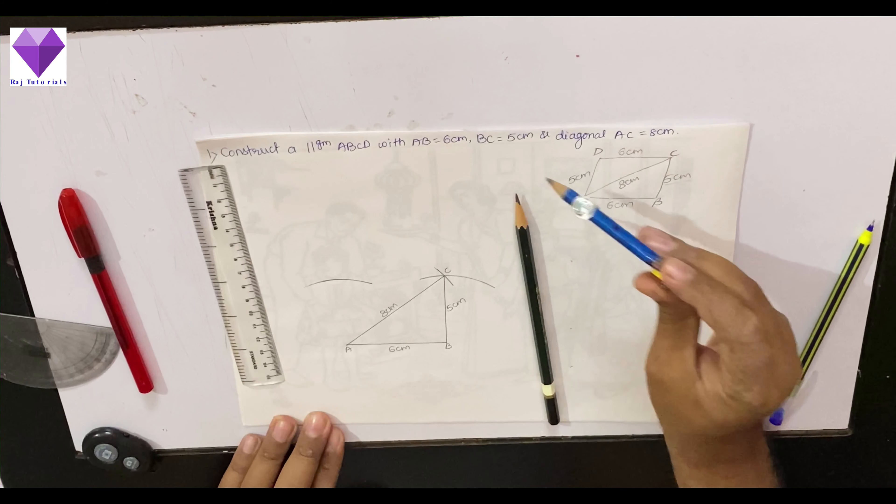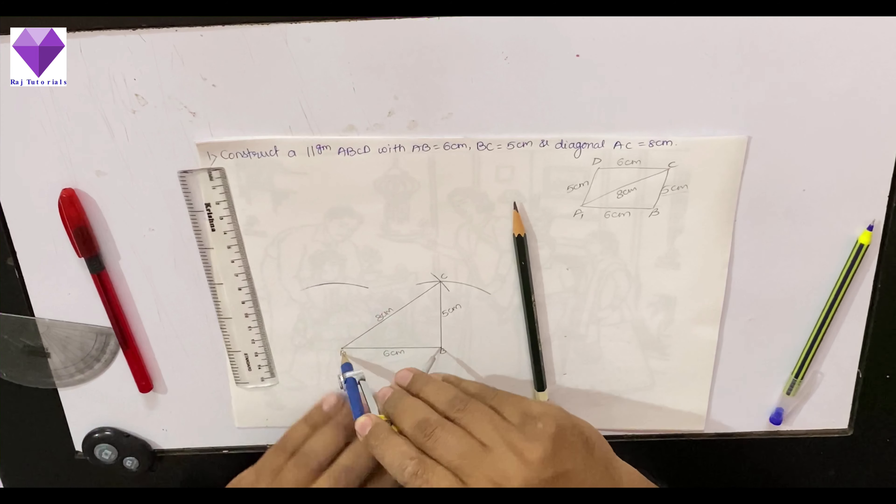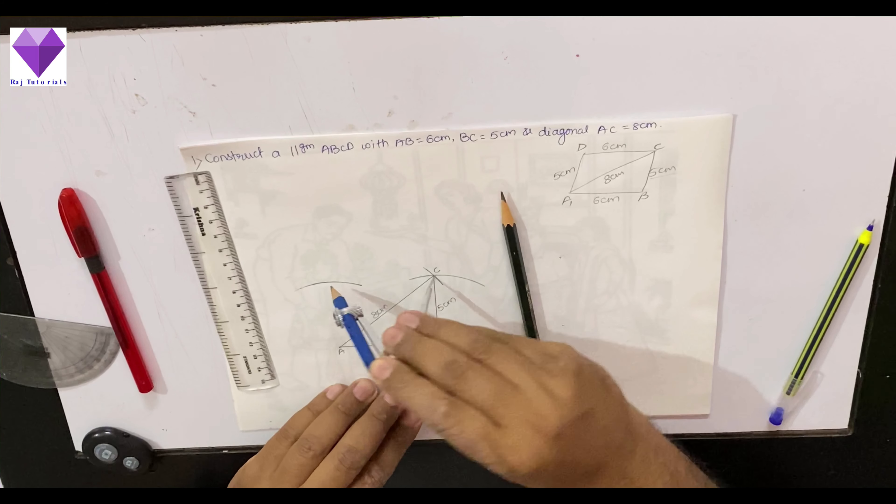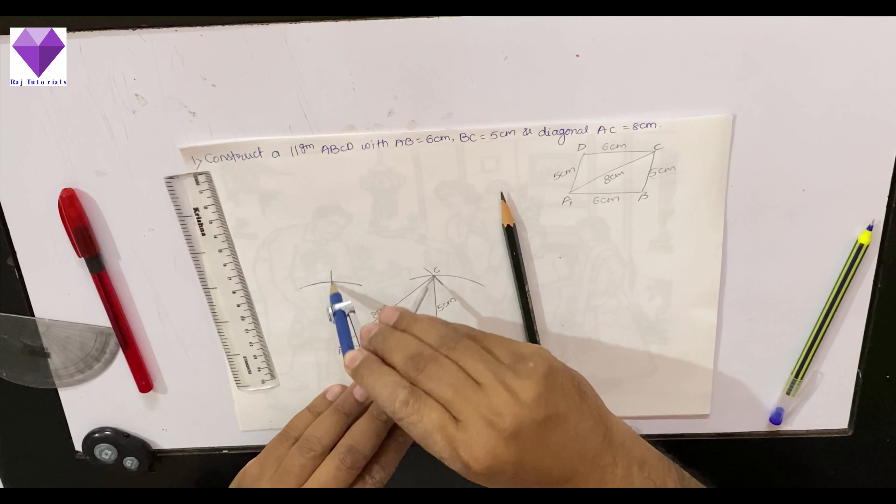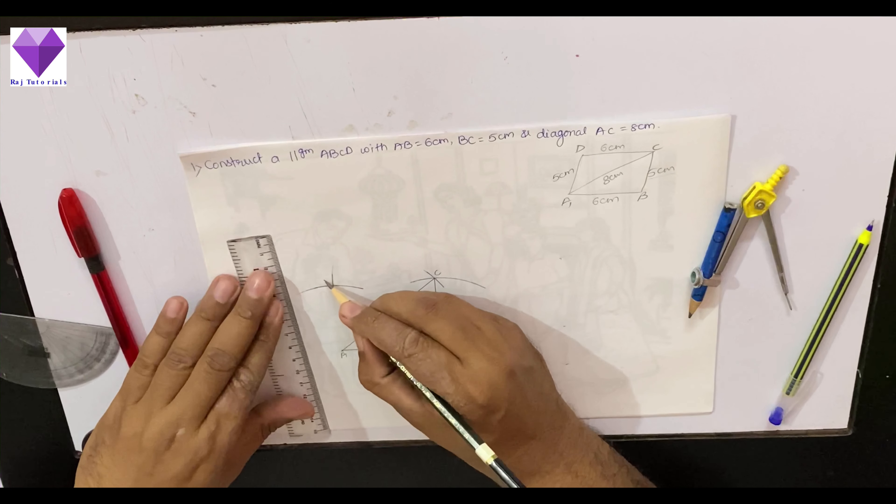This CD is equal to AB. I will measure AB and with C as center, I will mark an arc here to get point D. This point is D point.